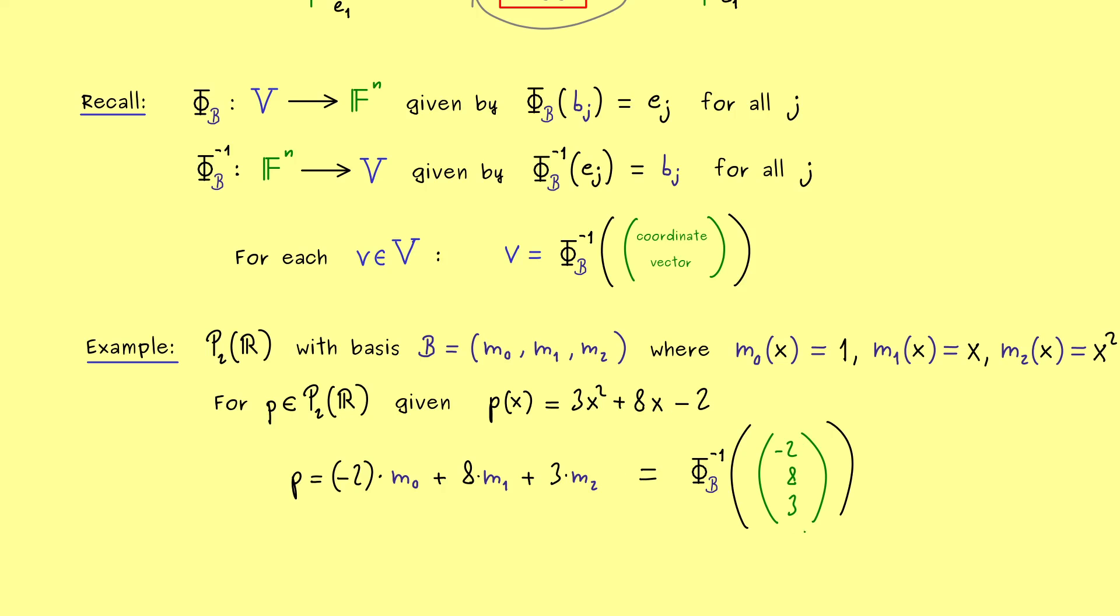And if we put this into our φ inverse we get our abstract p. Hence the basis isomorphism here is the translation you should never forget. Only with that in mind this vector in R³ has the meaning of a polynomial.